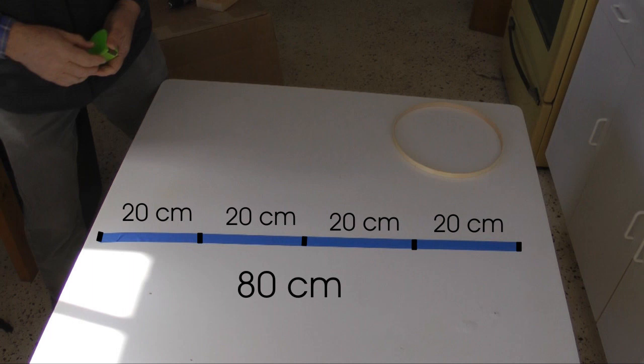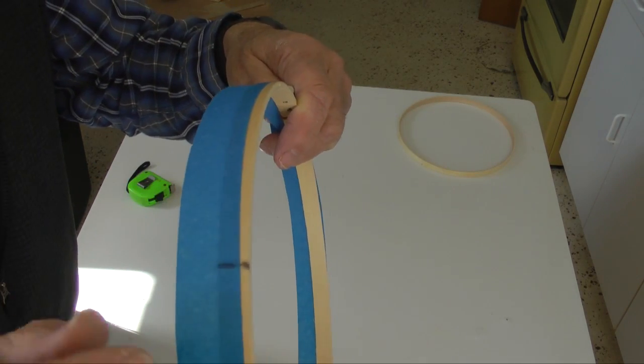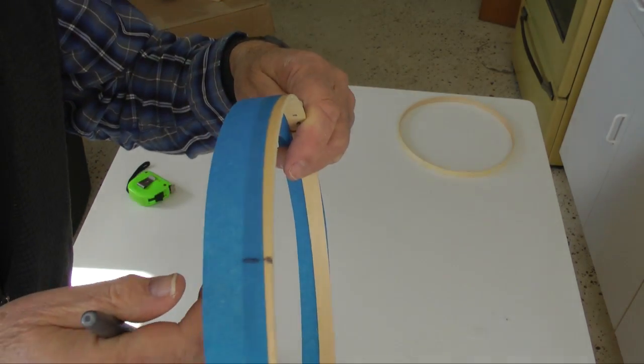Reattaching the tape to the hoop, I transferred the four marks to the hoop. Do this with both hoops. Note one mark aligns with the gap in the larger hoop.